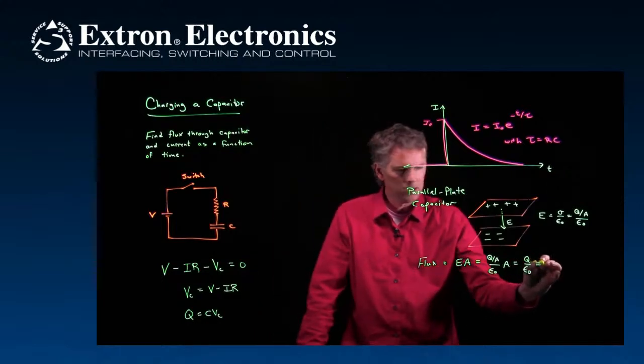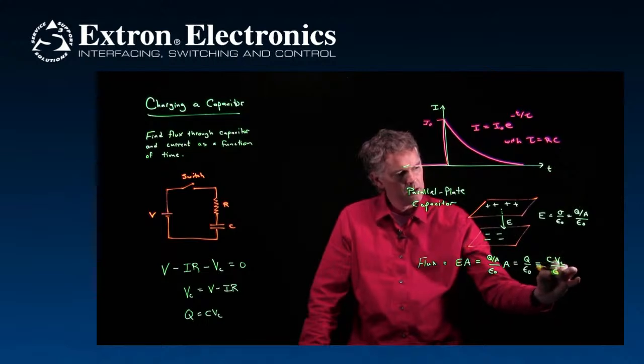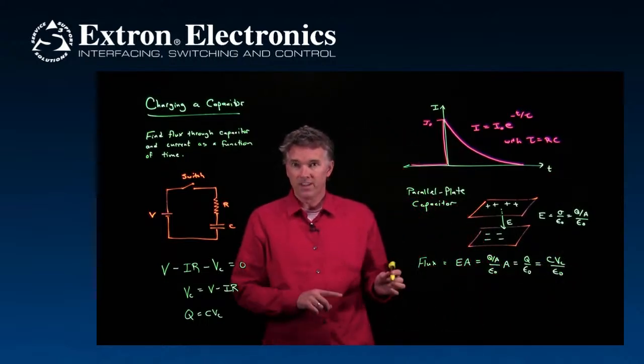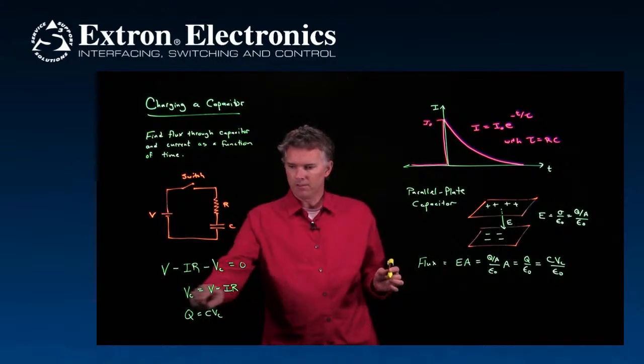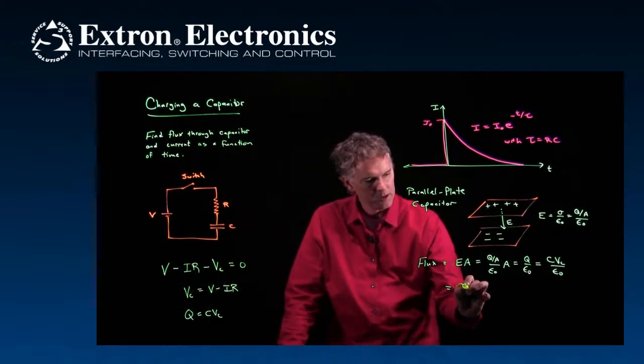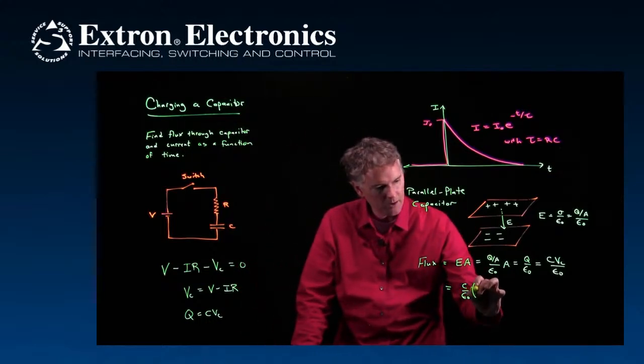The voltage across the capacitor multiplied by its capacitance, that tells you how much charge is on it. So we can put that in right here. We've got C times VC over epsilon naught. But VC is this thing right here.